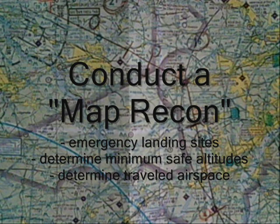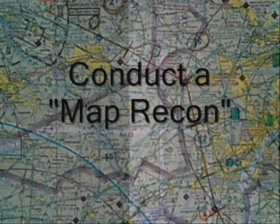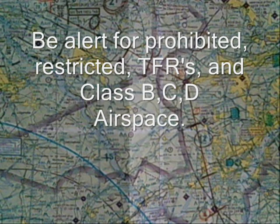You also need to determine your minimum safe altitude, and you have to determine the airspace you'll be traveling through — whether it's prohibited, restricted, if there are any TFRs, or if you're traveling through Class Bravo, Charlie, or Delta airspace.